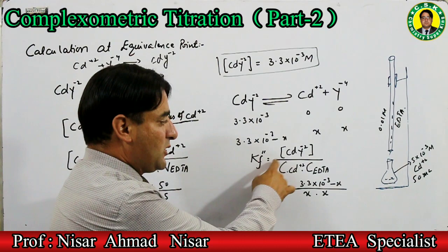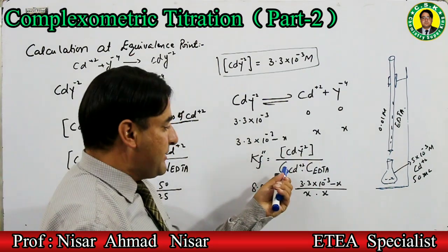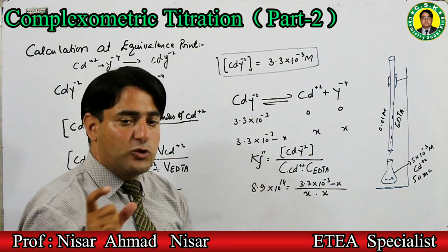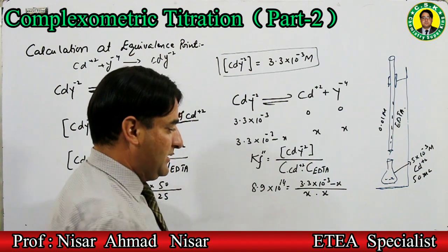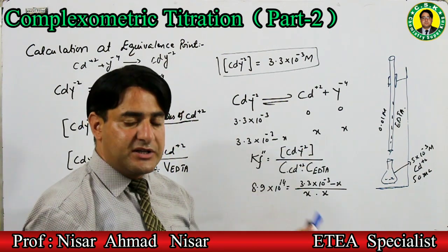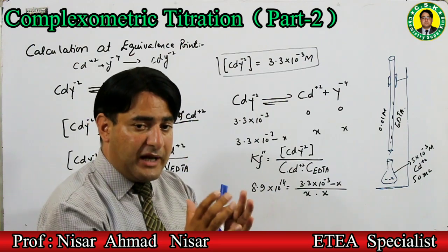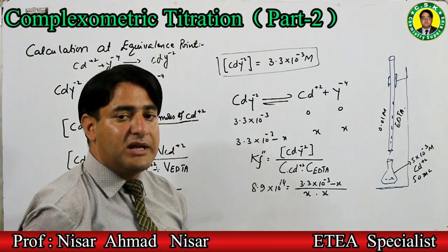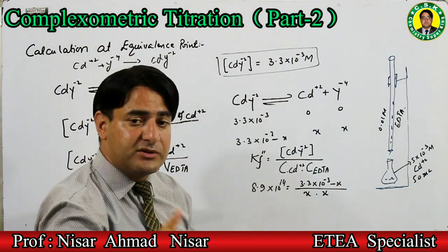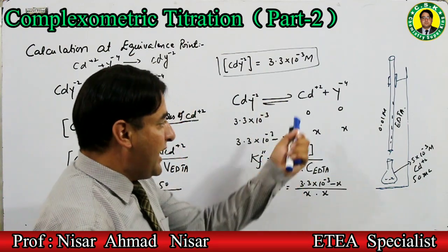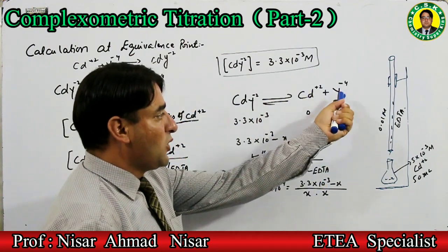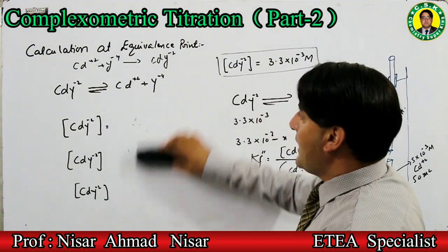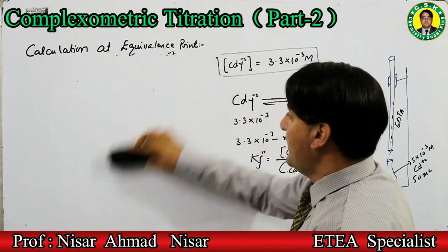Conditional formation constant لکھا: Kf'' = [CdY²⁻] ÷ ([Cd²⁺][Y⁴⁻])۔ Kf'' کی value ہے 4.9×10¹⁴۔ Equation لکھیں: 4.9×10¹⁴ = (3.3×10⁻³ − x) ÷ (x²)۔ اس equation کو ہم solve کر کے x کی value find کریں گے۔